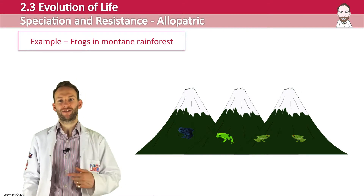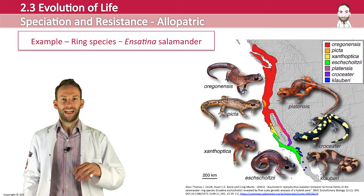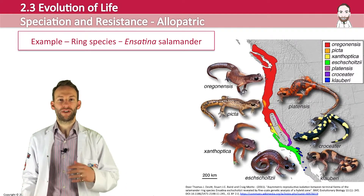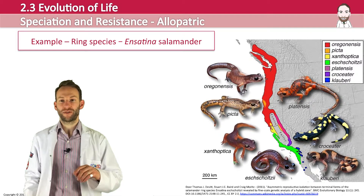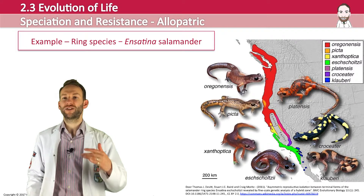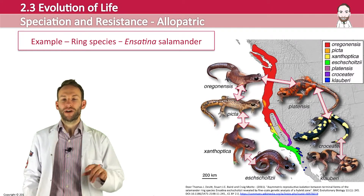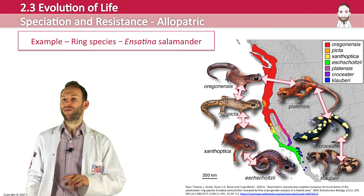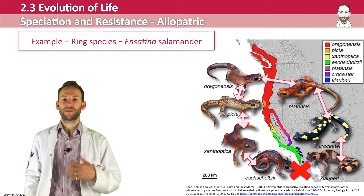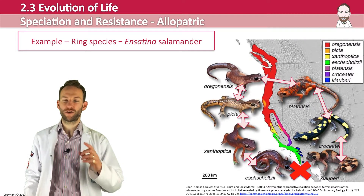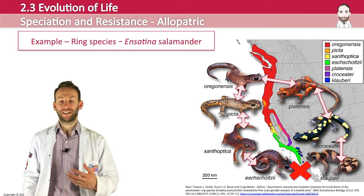Another specific example of allopatric speciation is ring species. The Ensatina salamanders are an example of a ring species. These organisms show variation due to being separated by distance, but adjacent populations can still interbreed. They can interbreed with the next deme, and the next, and the next. But because evolution has occurred down around a geographical barrier, by the time the two extreme populations could technically meet again on the other side, they've changed so much they can no longer interbreed.